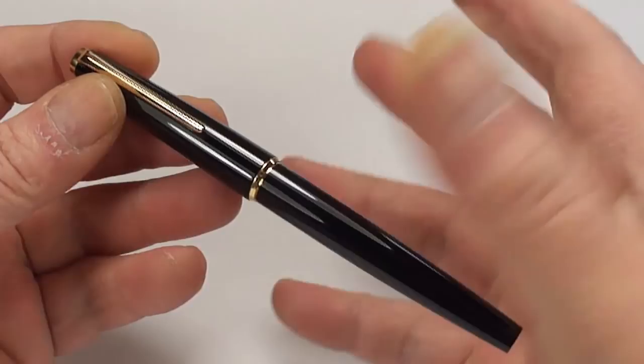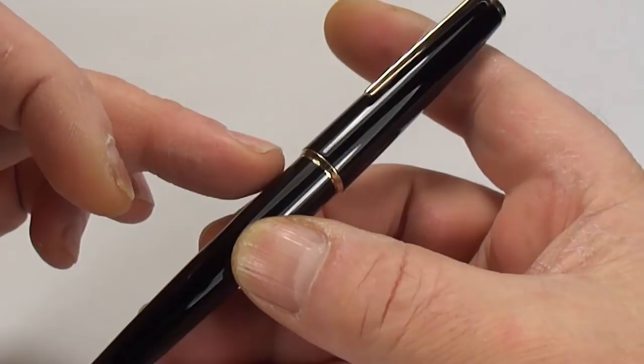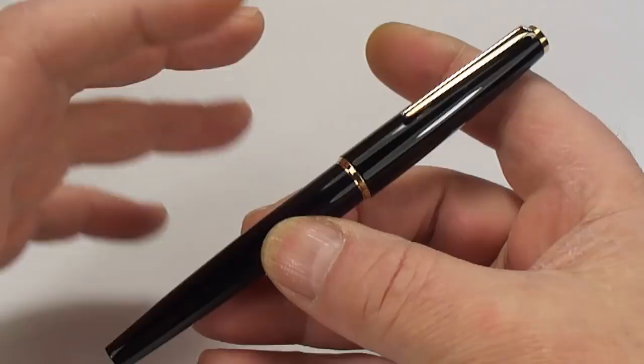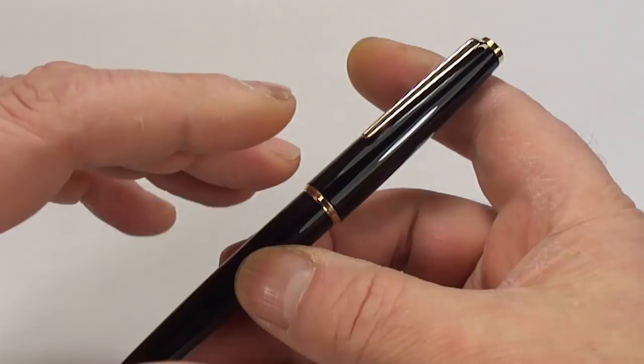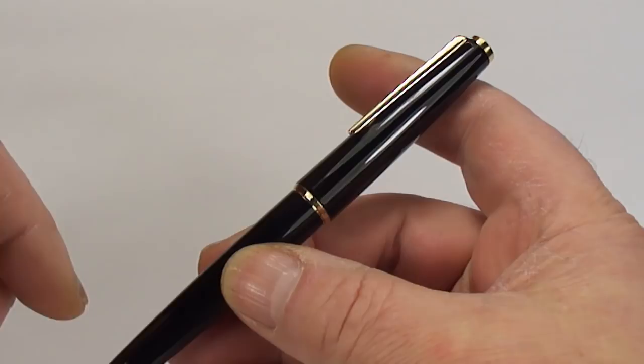Now, one way you can actually recognize some of these pens is by the cap band on the cap. Again, if you look at the similar pens, the different models, they've got different cap bands. Some of them had two cap bands, some of them had what they termed as a crown cap band. You can see which ones they are by simply looking at the bands. They're identifiable.